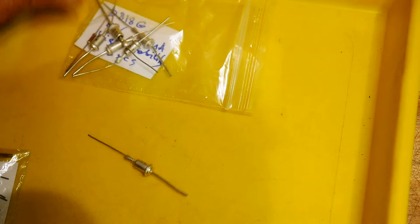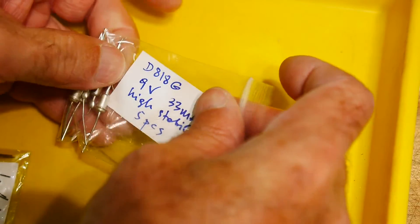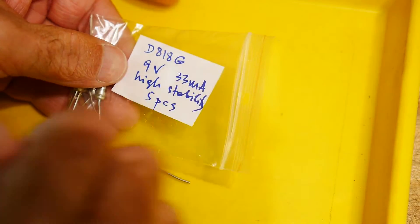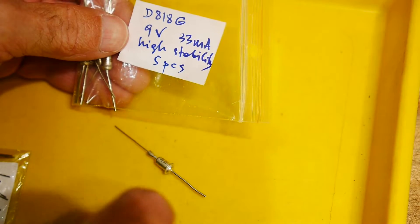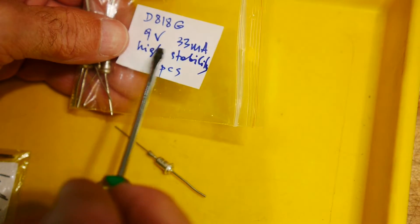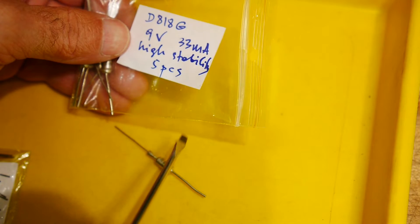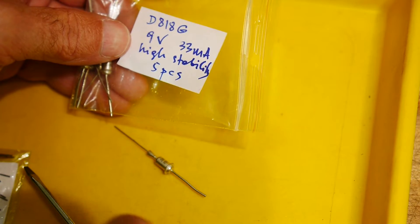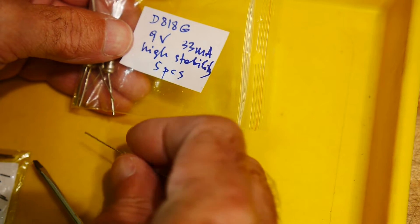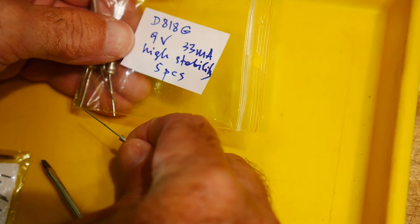The leads look silver plated as well. This is claimed to be a D818G, it's a 9-volt zener, 33 milliamps, and it says high stability. I was thinking these would make a good voltage reference if you needed a 9-volt voltage reference inside a circuit.